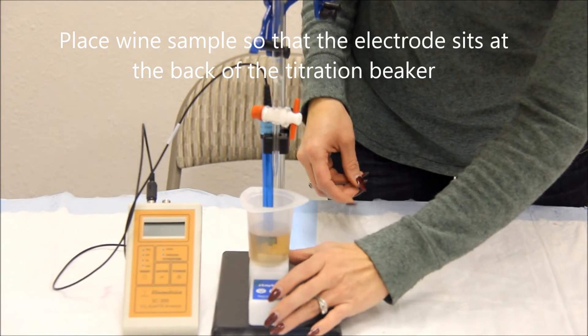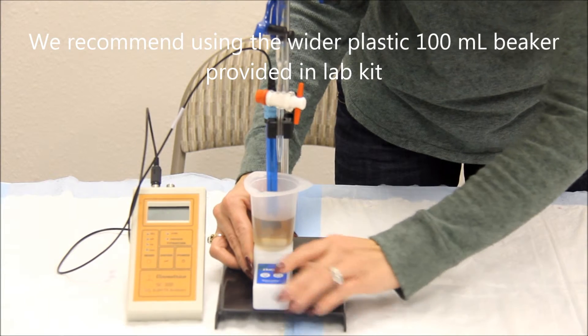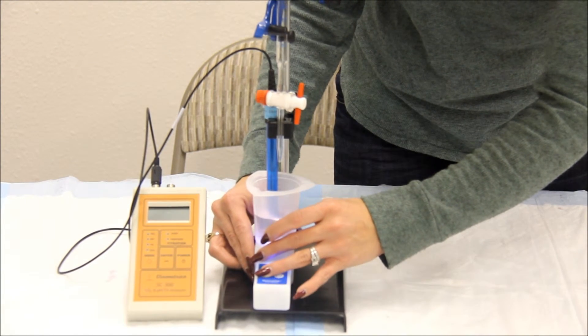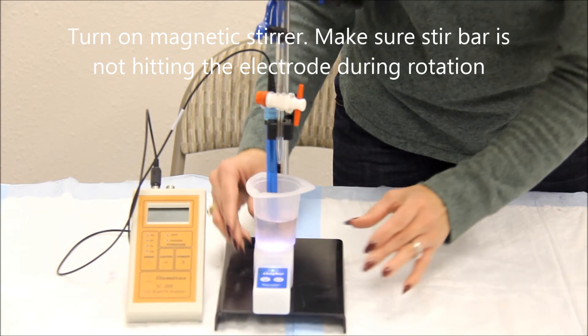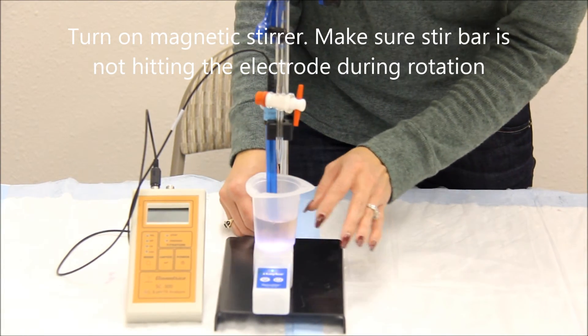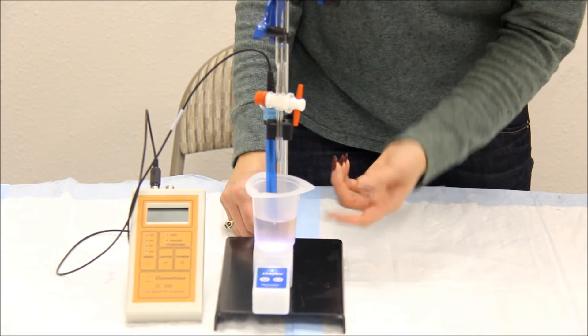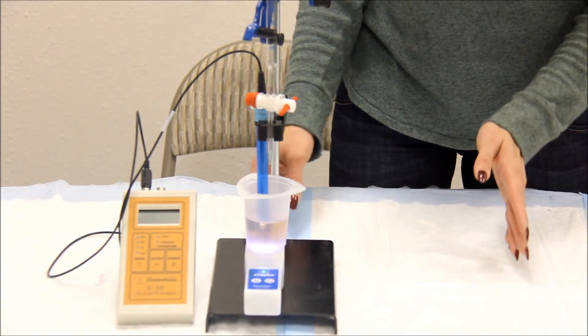You can turn your magnetic stirrer on by either hitting the power button or the light switch. Make sure the magnetic stirrer does not hit the electrode while it is mixing. You are now ready to begin any titration that you may need.